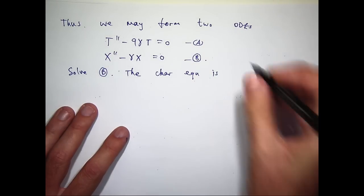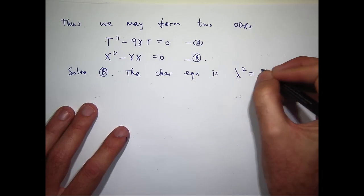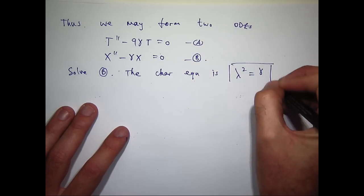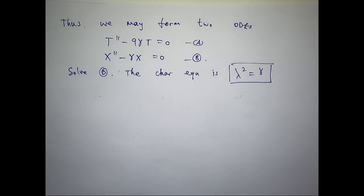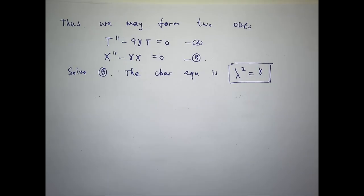If we can determine the roots lambda, I can write down the solution big X. But we don't know what gamma is — is gamma positive, negative, or zero? We have to consider all three cases.